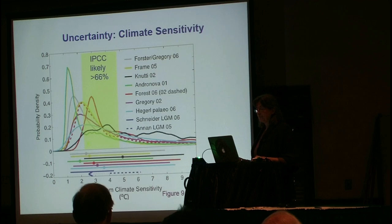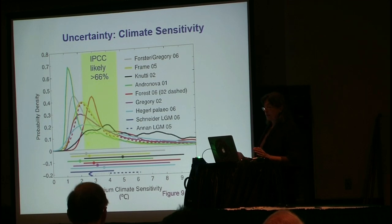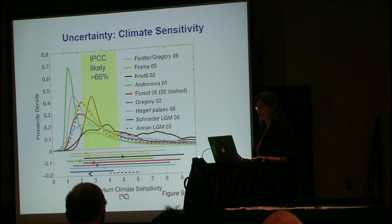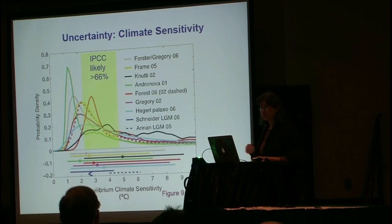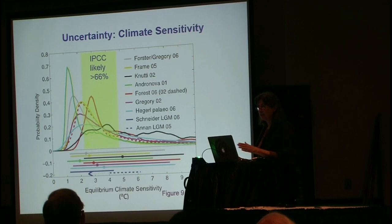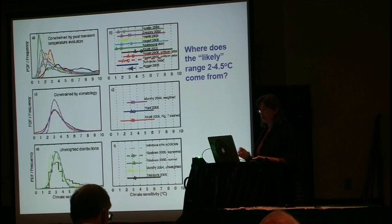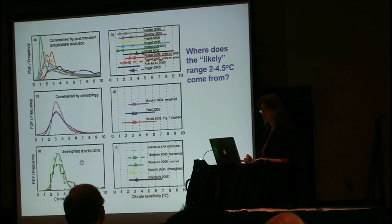Let's take a look at climate sensitivity. The IPCC has put 'likely' bounds around 2 to 4.5 degrees centigrade. This figure from the IPCC fourth assessment shows a number of different estimates of climate sensitivity. Most of these are done using low-order energy balance models and observations arranged over parameter space. If you look at this, half of these estimates have peaks that are lower than the 2 degree bound. So how did they come up with this 2 to 4.5 degrees? There are some clues given in chapter 10, covering three categories: constrained by past transient temperature evolution, constrained by climatology, and unweighted distribution.